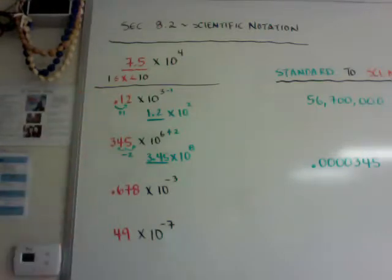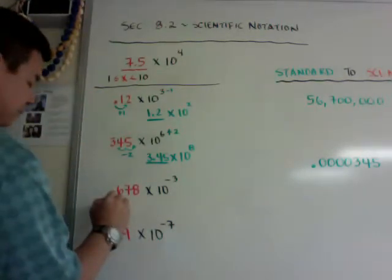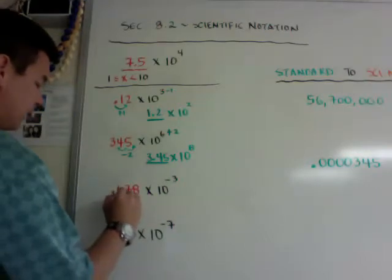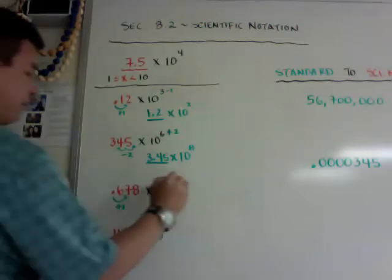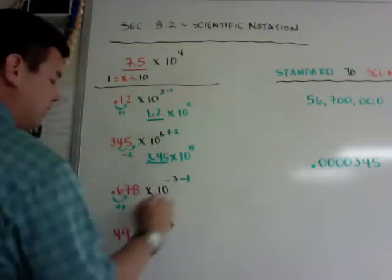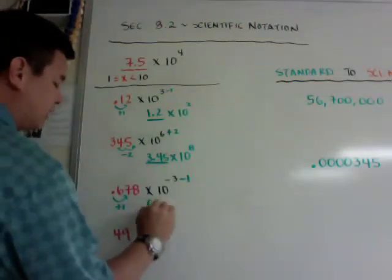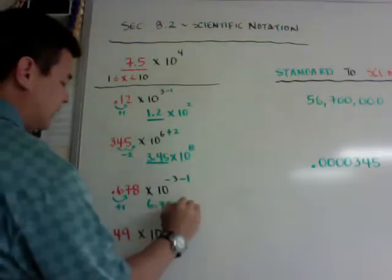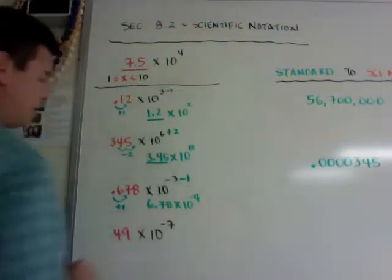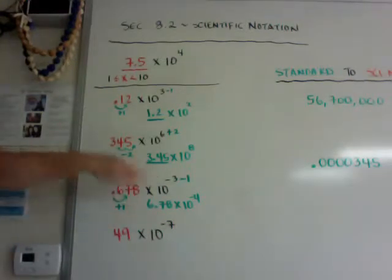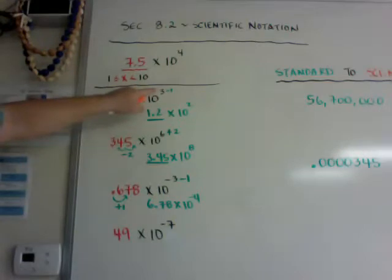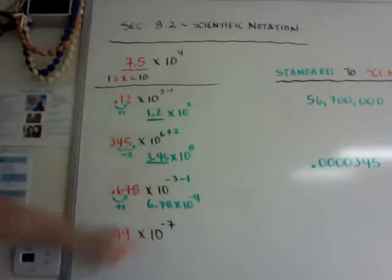Now negative exponents. It's the same thing in that I need to go this way, so it's going to be plus 1 this way, because I only want to go 1 decimal, and that means I need to minus 1 over here, so I get 6.78 times 10 to the negative 4th power. Just be careful with your negatives. I use negatives over here. I had the 3 and the 6, and I have the negative 3 and the negative 7 there.